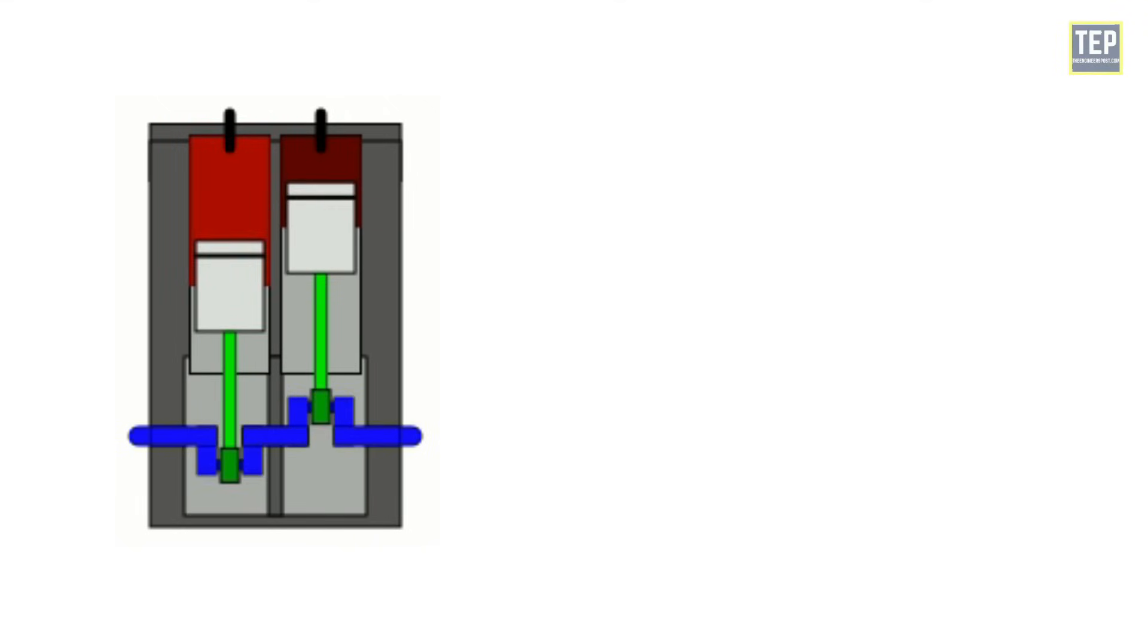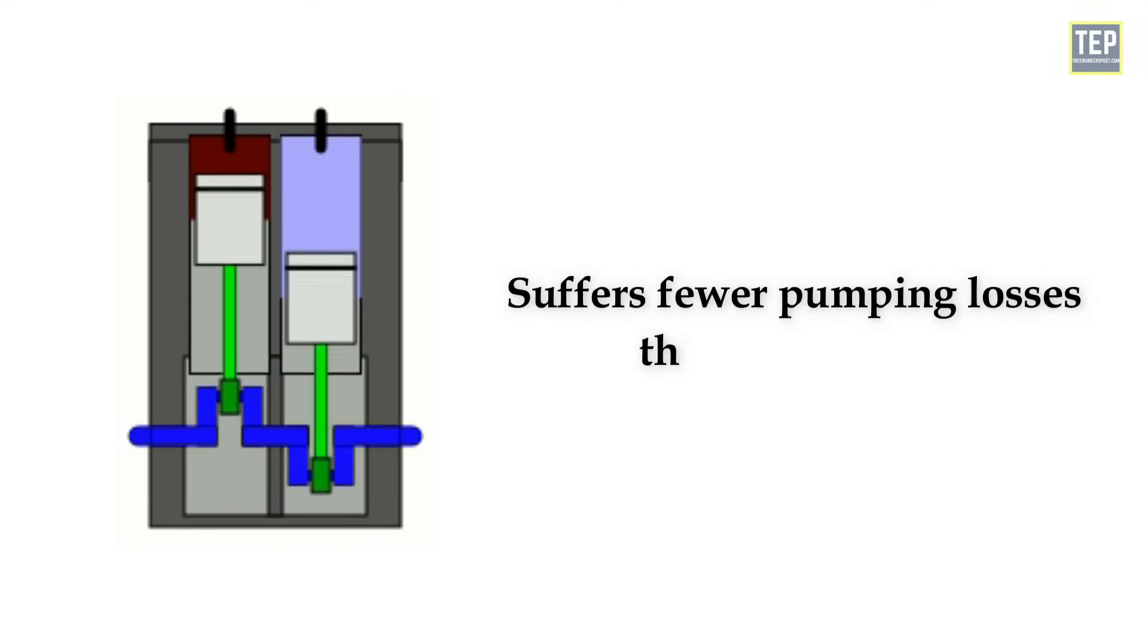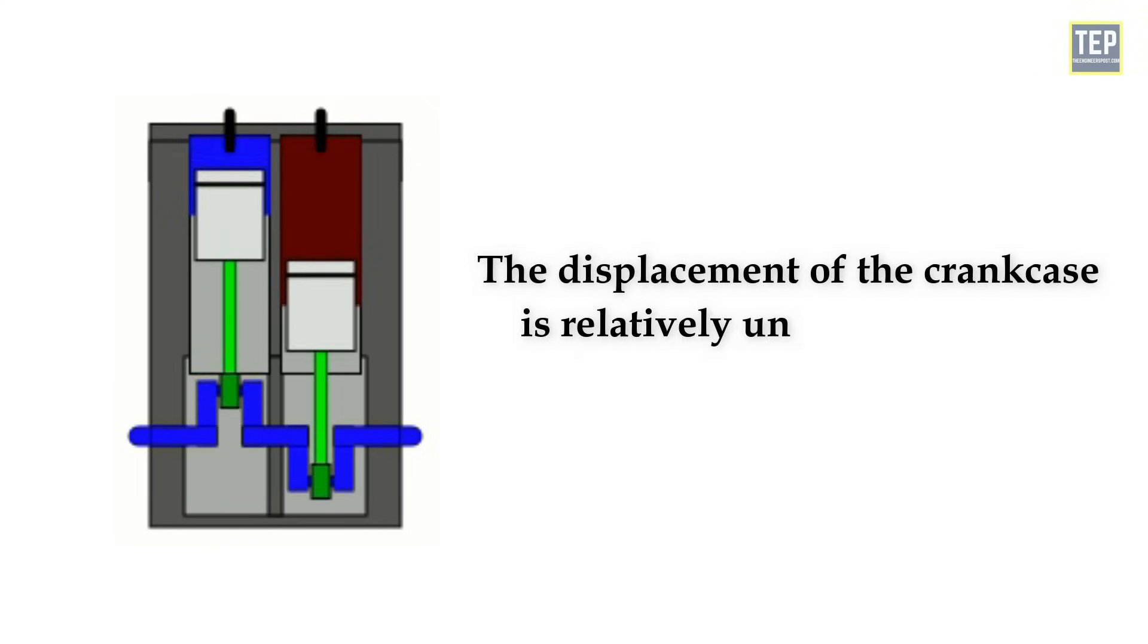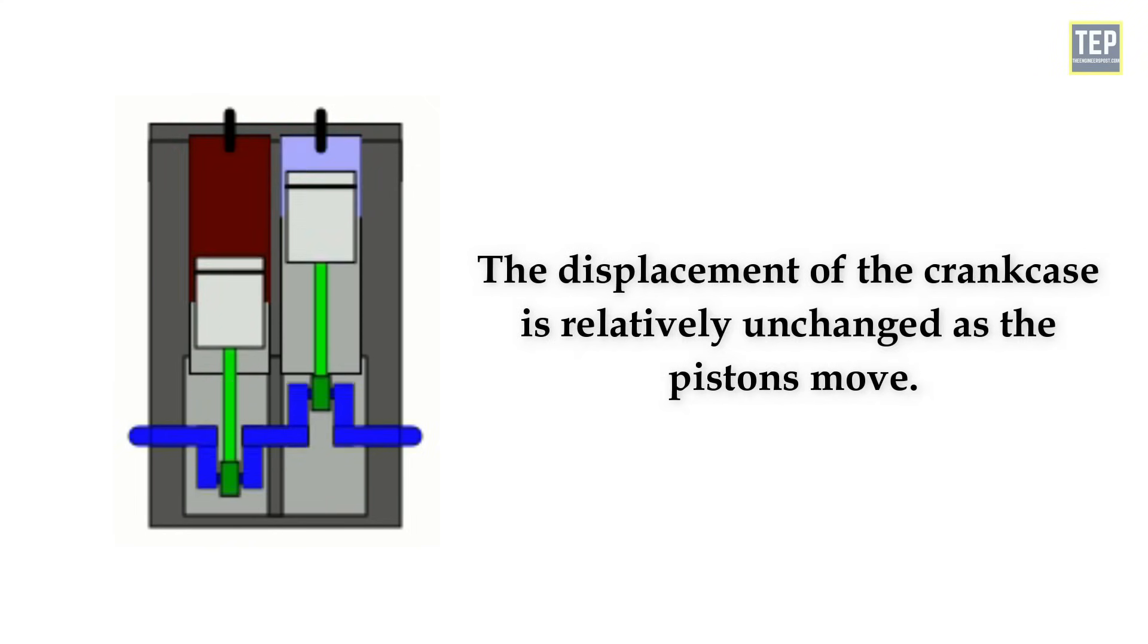A 180-degree crankshaft engine suffers fewer pumping losses than a 360-degree twin, because the displacement of the crankcase is relatively unchanged as the pistons move.